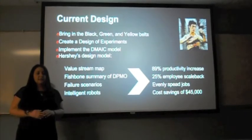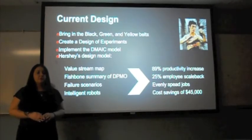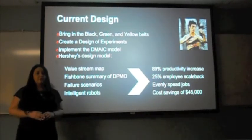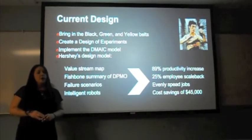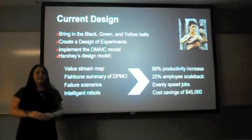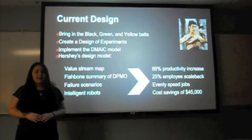After roles and expectations for personnel are outlined, a design of experiments, or DOE, is produced. Six Sigma reviews the controllable input factors and uncontrollable input factors and their respective responses. Most plants implement the DMAIC model to improve, which is outlined in the next slide.